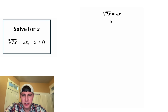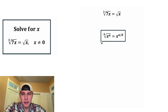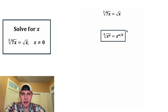So for the first step, I wanna rewrite these as rational exponents. Here are the notes right here. If you ever have the bth root of x to the a, you can rewrite that as x to the a over b, where the denominator is the root, and the numerator is the exponent.